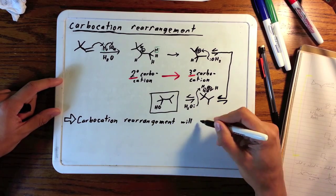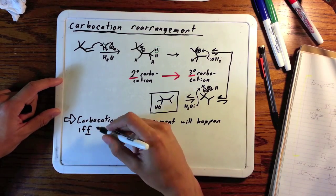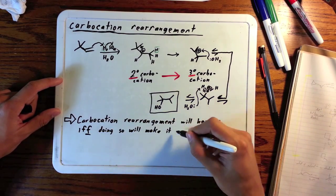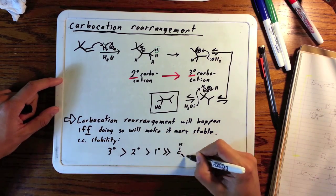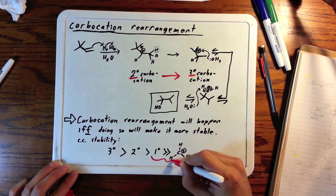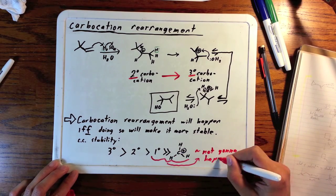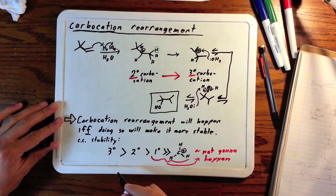Tertiary are the most stable, followed by secondary. Primary carbocations and the methyl cation are so unstable they're essentially not going to happen. So remember, if you can move from a secondary carbocation to a tertiary, that will probably happen.